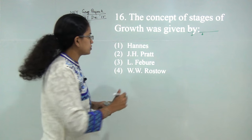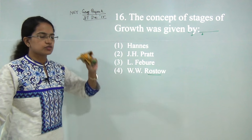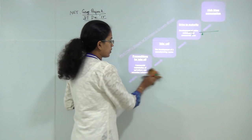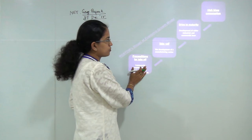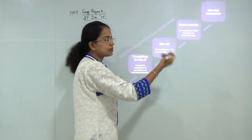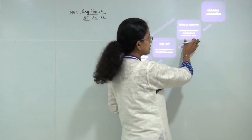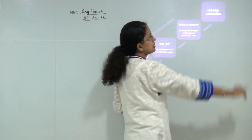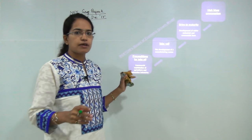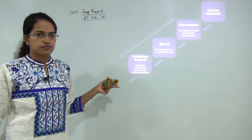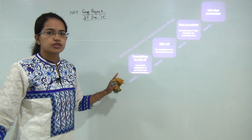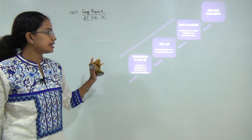Next: the concept of stages of growth was given by Rostow. Rostow talked about the stage model, dividing stages as preconditions for takeoff, takeoff where maximum development occurs, drive to maturity, and finally the era of high mass consumption. This has been covered in a separate session on growth models.